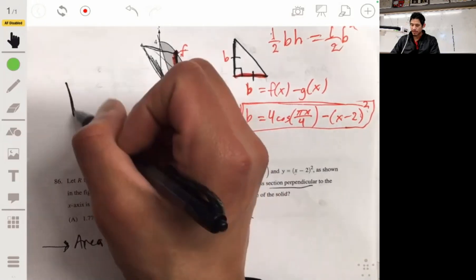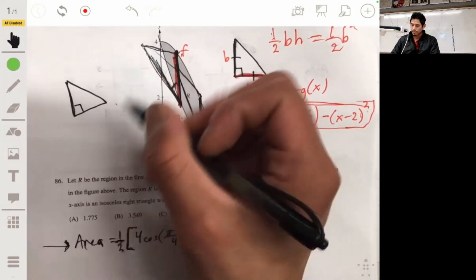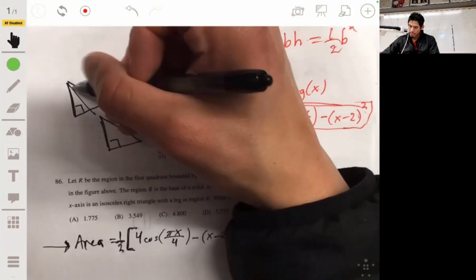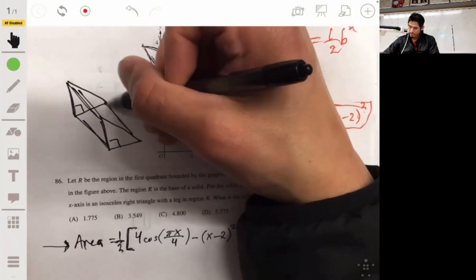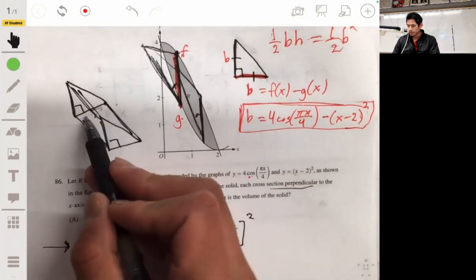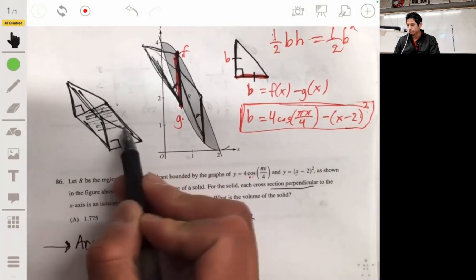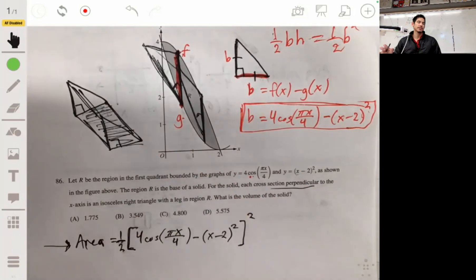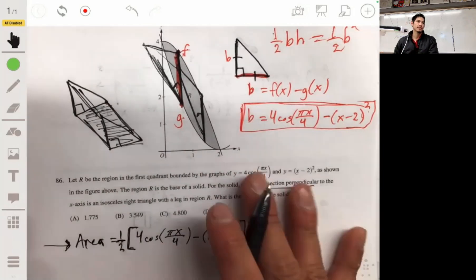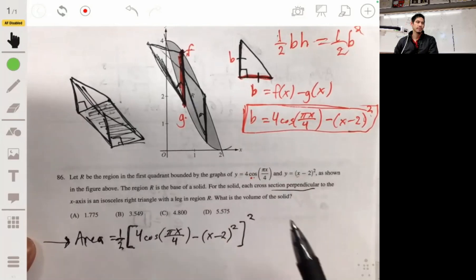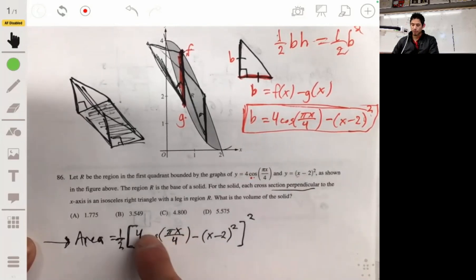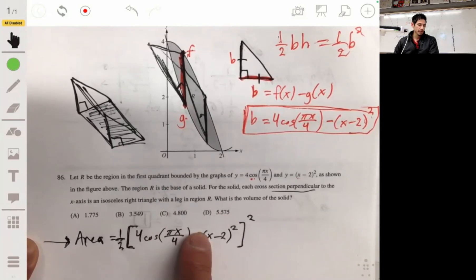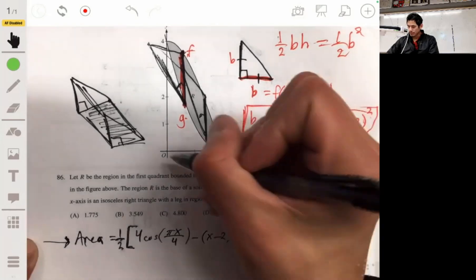So you want to find the volume of this isosceles cross-section solid. We're going to integrate this from here to here, so from 0 to 2. So what we eventually have to find is the volume of this object.